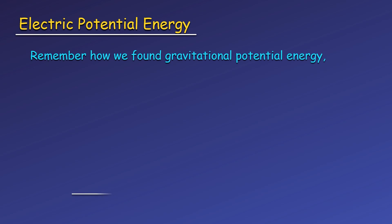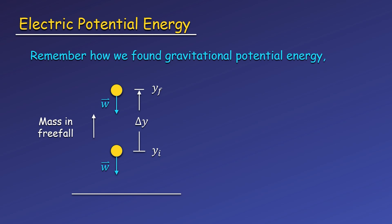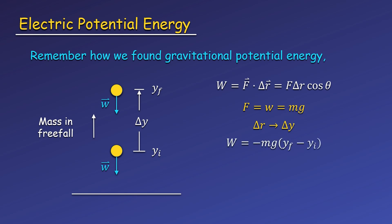Now let's look at how we found gravitational potential energy near Earth's surface. We have a mass moving upward, and since it is only under the influence of gravity, it is in freefall. The force of gravity or weight is acting downward, and the mass moves through a vertical displacement delta y. We can write the work of this constant force by taking the dot product of the force with a displacement. The force will be the weight, delta r will become delta y, and the angle between the force and displacement is 180 degrees. So cosine of 180 degrees gives us minus one. To find the change of potential energy, we add a minus sign in front of the work, and we define the quantity on either side to be the potential energy. In this case, the potential energy is mgy. Now remember, the mass in freefall is also pulling on the Earth with the same amount of force as the Earth is pulling on it. However, the Earth moves through such a small displacement that it is negligible, and we can ignore the work done on the Earth.